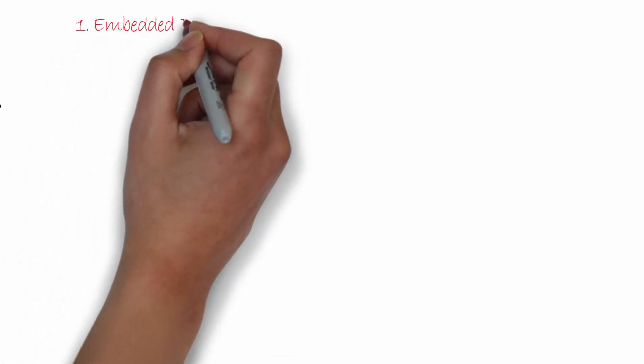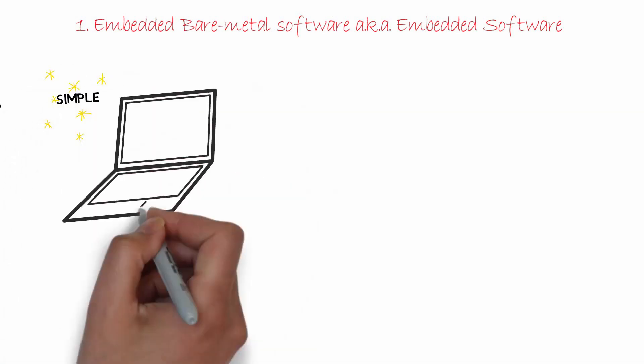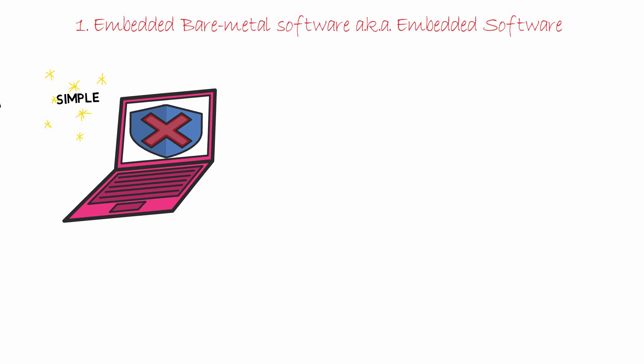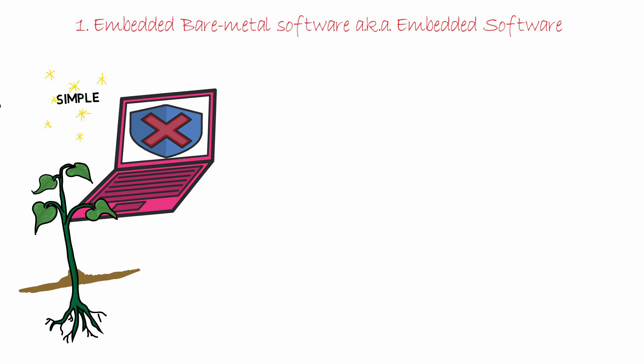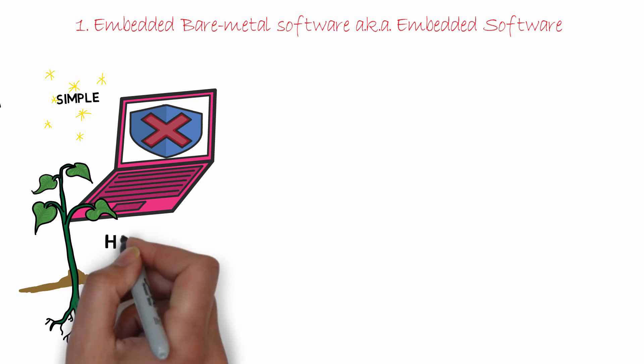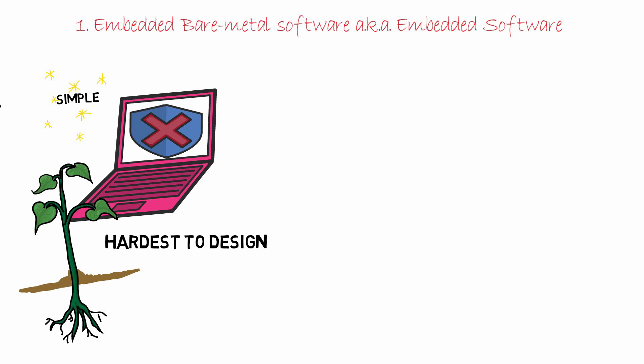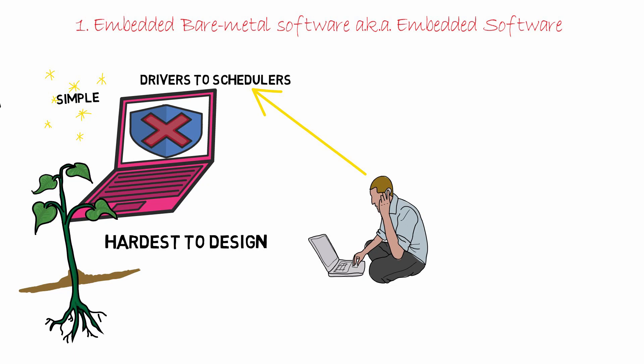The first type is embedded bare metal software. This is the simplest type of embedded system which does its job without an operating system — all other types branch out of this one. Even though the entire software running on these systems looks simple, it is actually the hardest to design since there is no operating system present. Everything needed by the application, from the driver to the scheduler, must be designed and developed by the software engineering team — that's where you come in.